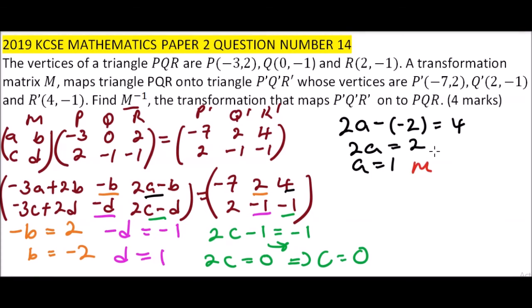Now we got all the elements such that our M equals, our A is 1, our B is -2, our C is 0, and our D is actually 1. So that is matrix M.